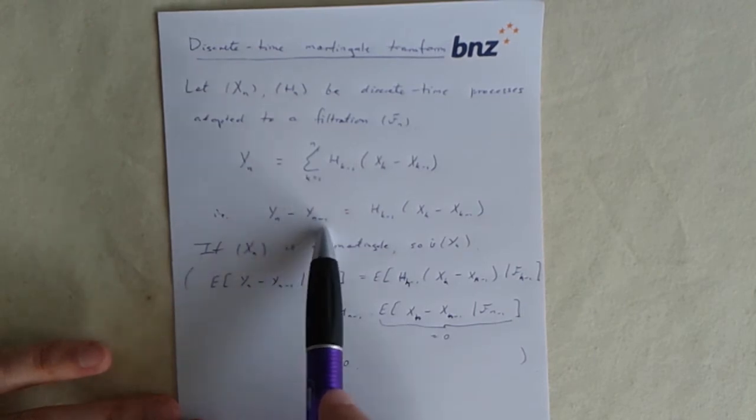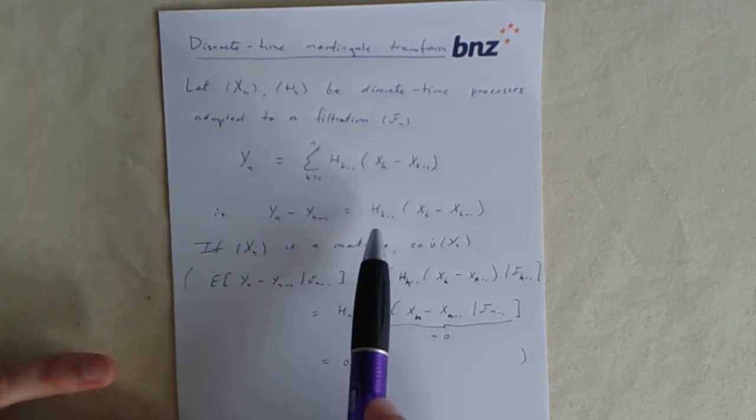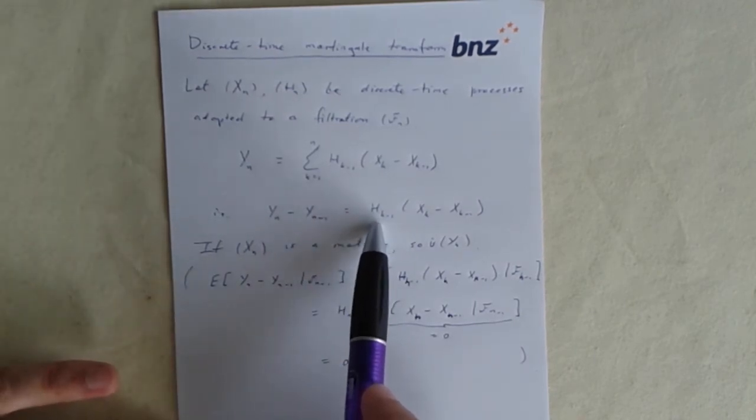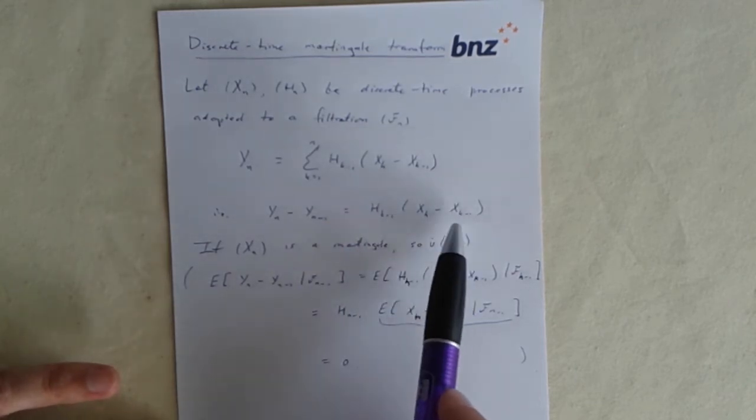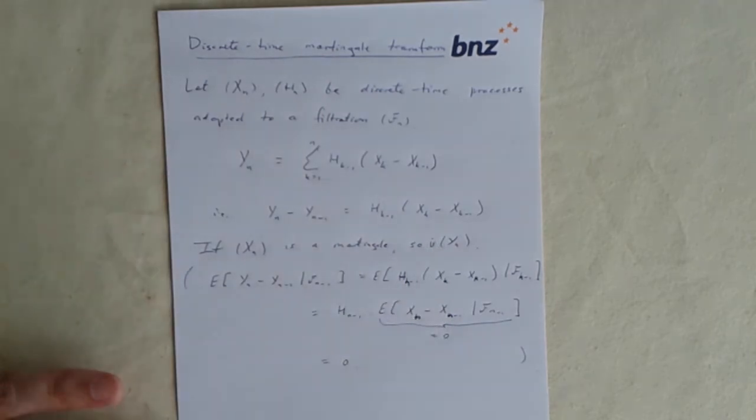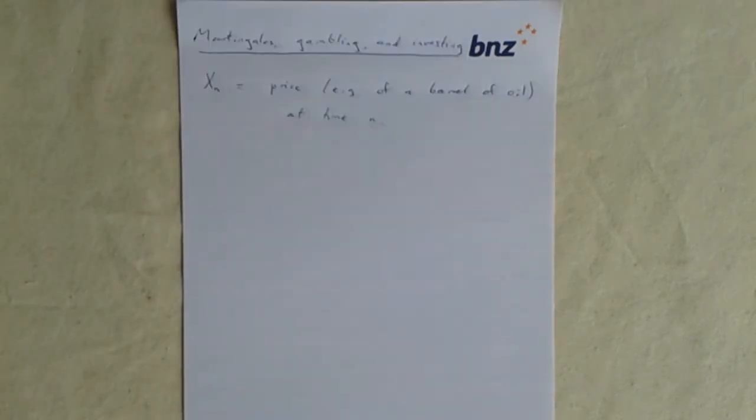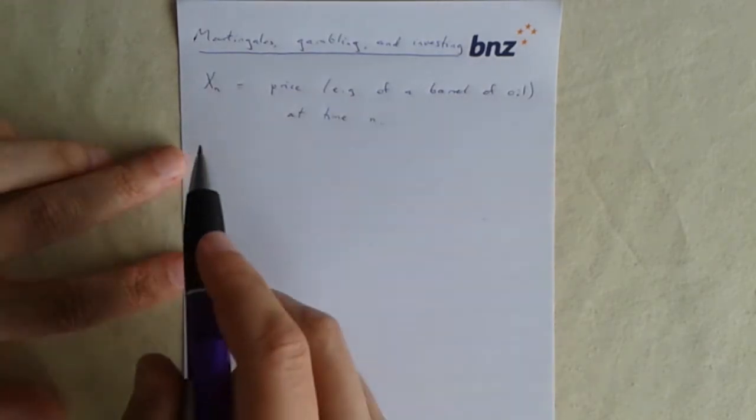So this is a way of, if you've got a discrete-time Martingale, this is a way of making another discrete-time Martingale out of it by adjusting the sizes of the increments. Whatever Martingale increment you had in the first place, you can just adjust it by multiplying by another random variable. And as long as that other random variable is something that is known at time k minus 1 here, then you've got yourself a new Martingale.